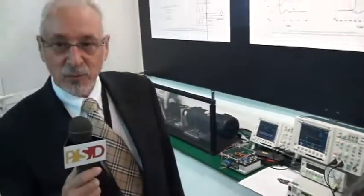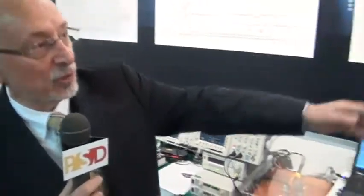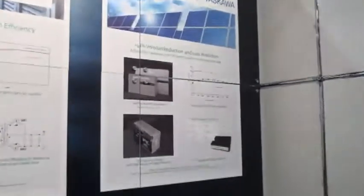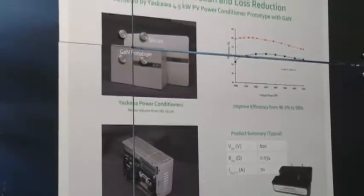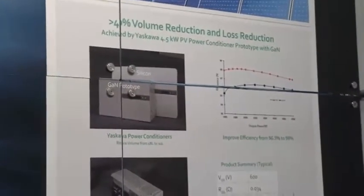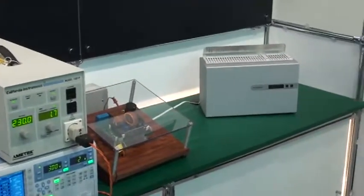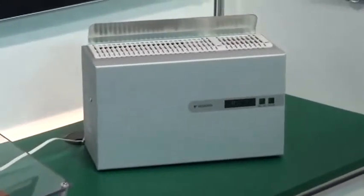In addition to that, we have a PV inverter that is the first commercial product using gallium nitride to reduce the size 40% and make the smallest 4.5 kilowatt residential inverter for the Japanese market.